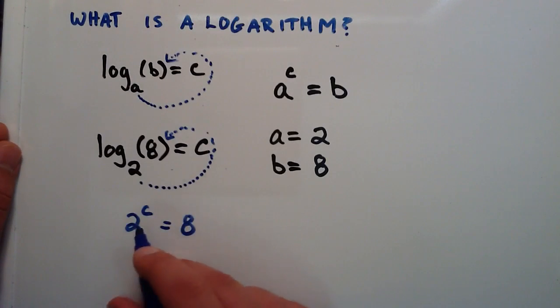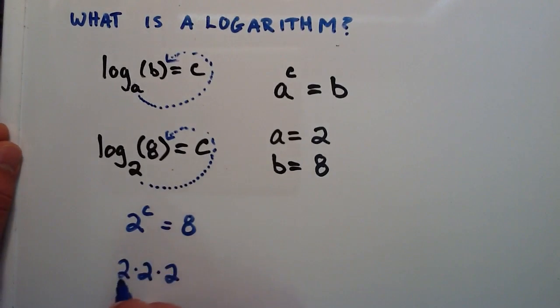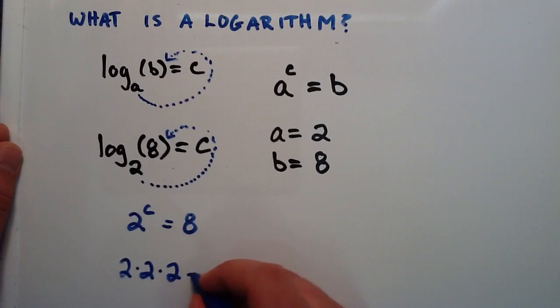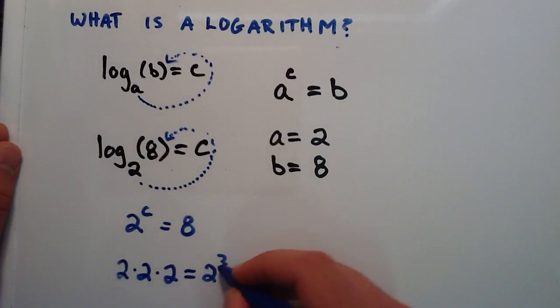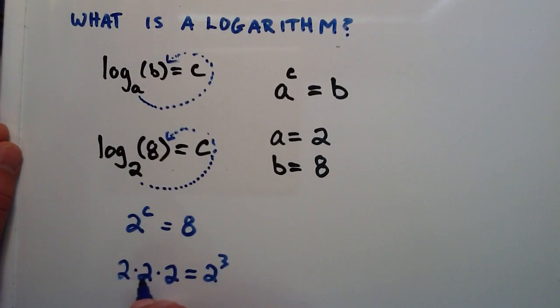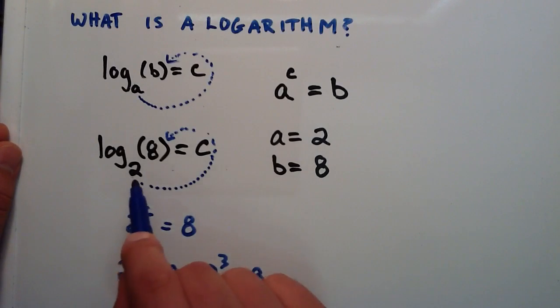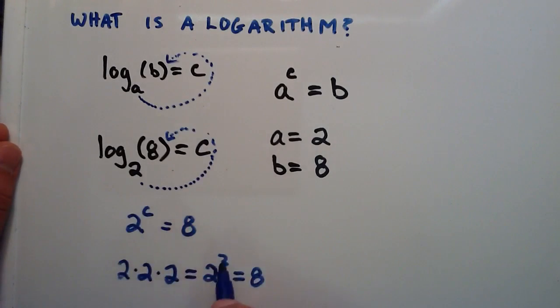And it turns out that 2 times itself 3 times, 2 times 2 times 2, 2 multiplied by itself 3 times, is the same thing as 2 to the 3rd, and 2 times 2 is 4, 4 times 2 is 8, so this equals 8. So our C has to be equal to 3.